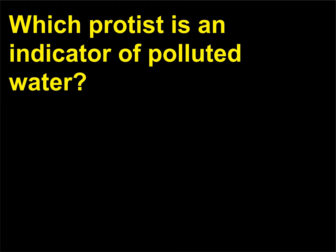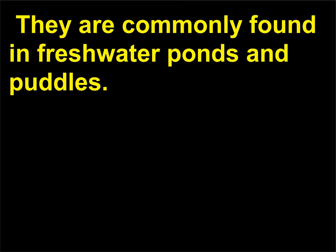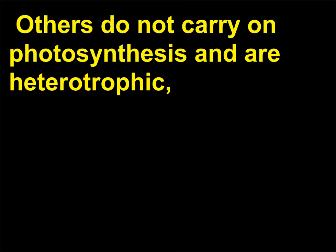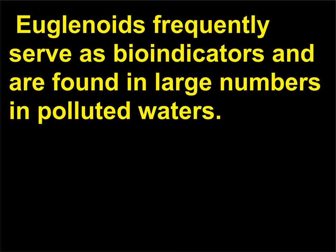Which protist is an indicator of polluted water? Euglenoids are unicellular flagellates; many euglenoids are capable of photosynthesis and are autotrophic. They are commonly found in freshwater ponds and puddles. Others do not carry on photosynthesis and are heterotrophic, often found in water with large amounts of organic material. Euglenoids frequently serve as bioindicators and are found in large numbers in polluted waters.